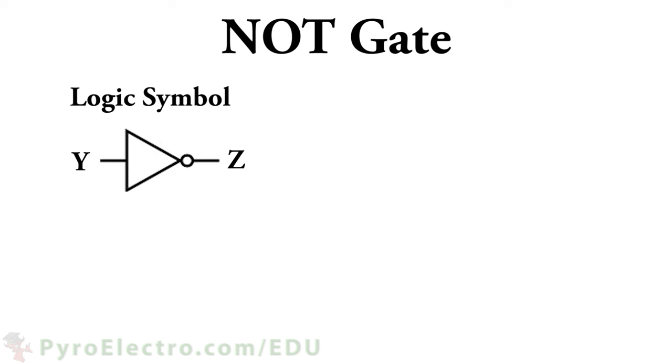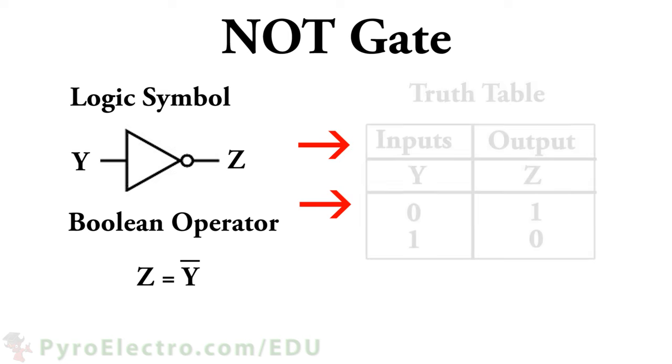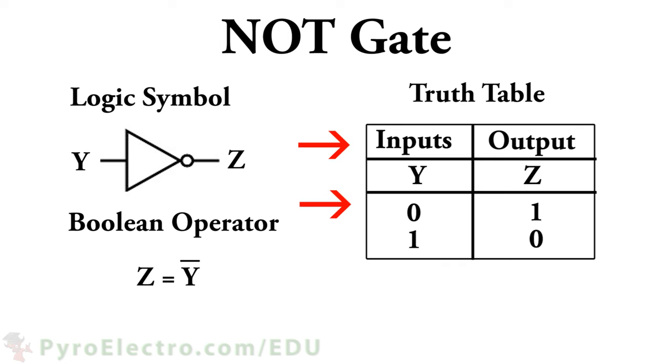The next Boolean operator and logic gate is called the NOT gate, and in Boolean algebra it is represented by putting a line over the input. The NOT gate is the most simple of all the logic gates because all it does is invert the input signal from logic 1 to logic 0 or from logic 0 to logic 1.